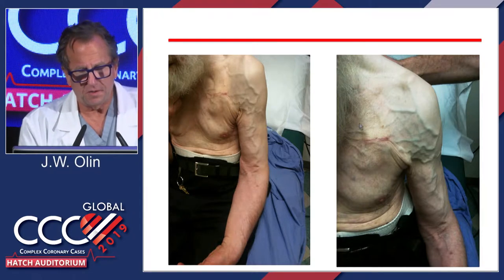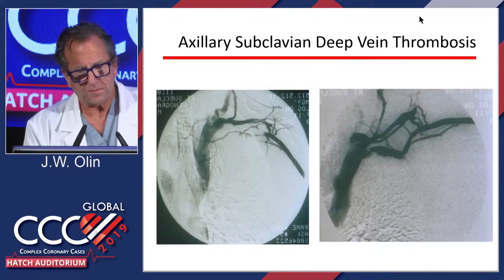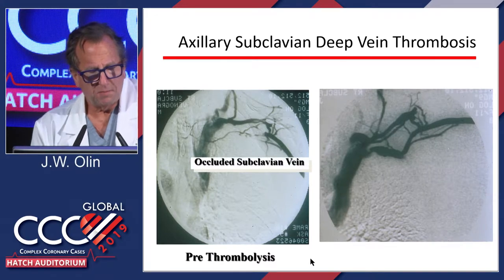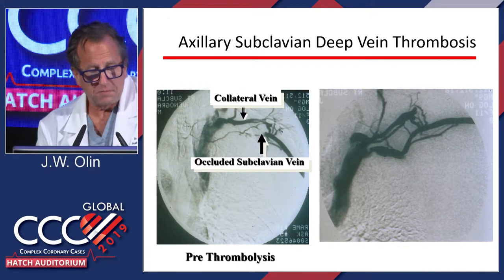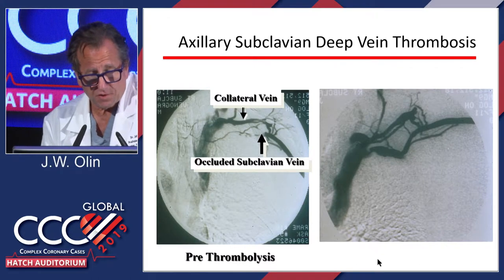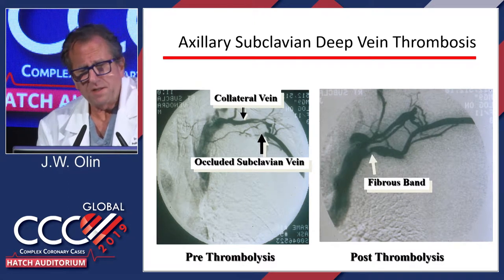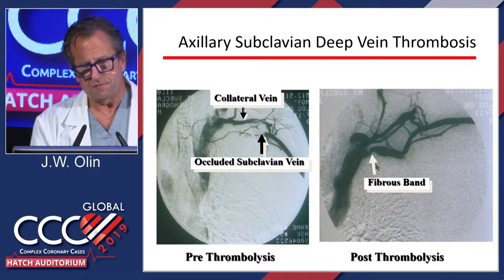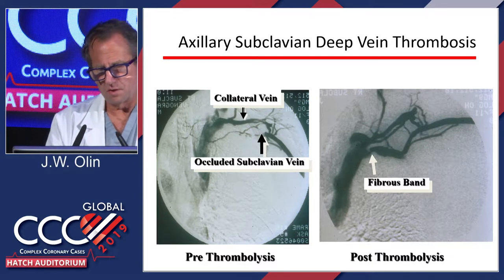Here's a 90-something-year-old with a pacemaker — I've never seen someone this old develop such great collaterals. Pre-thrombolysis, the subclavian vein is occluded; this collateral vein can be mistaken for the subclavian on ultrasound. Post-thrombolysis it looked much better. The patient then underwent a first rib resection, because if they don't do that it's going to recur. They're often left with a fibrous band — if the surgeon doesn't take care of it, you need to put a stent in, otherwise they'll re-thrombose. A lot of Major League Baseball pitchers have this.